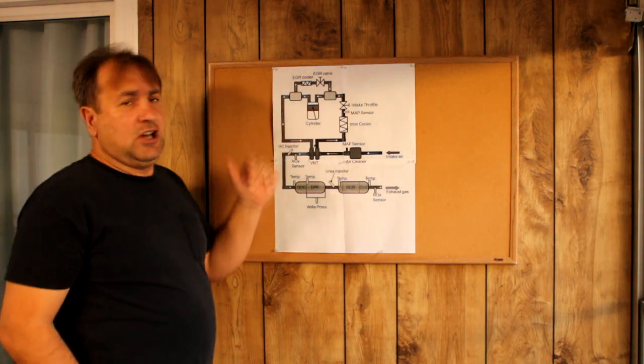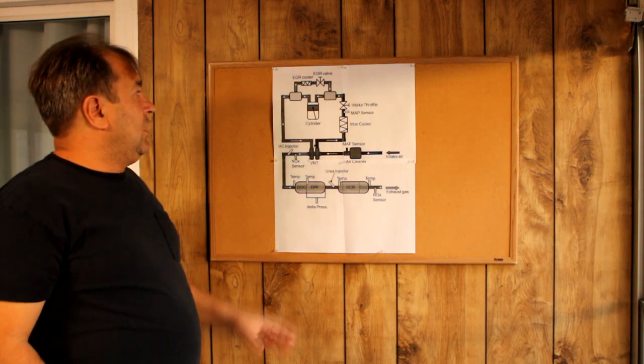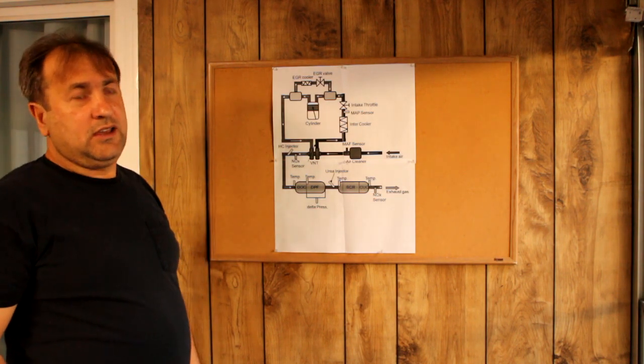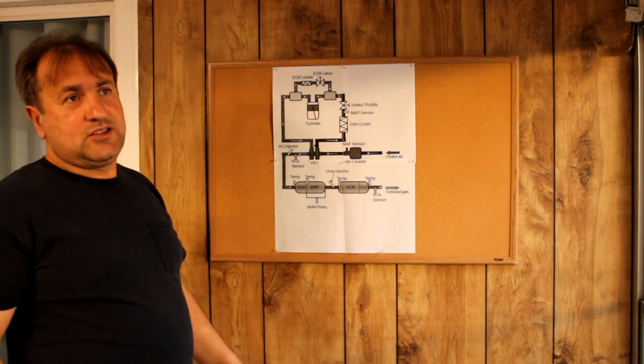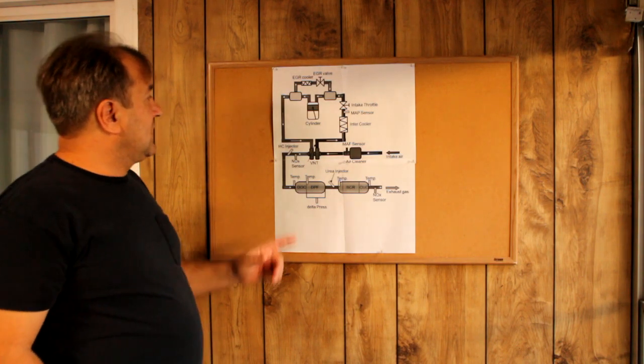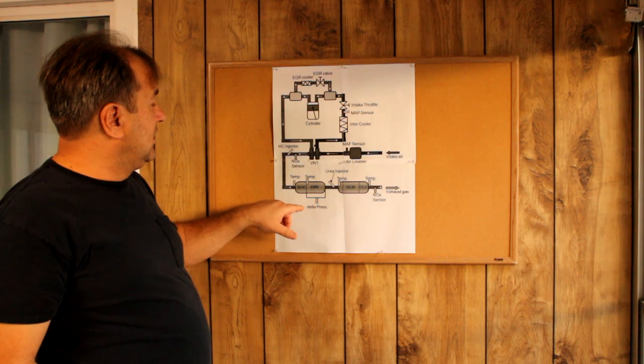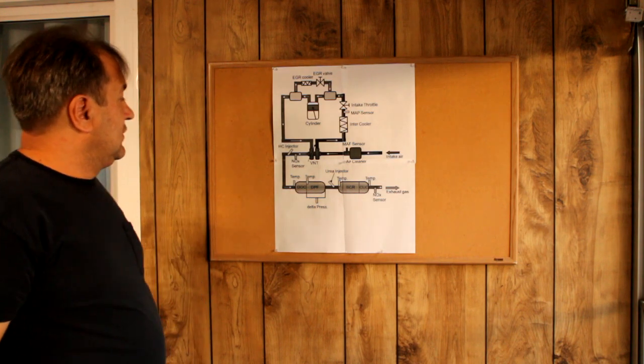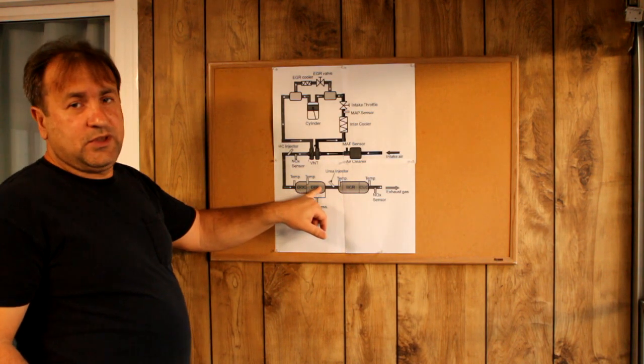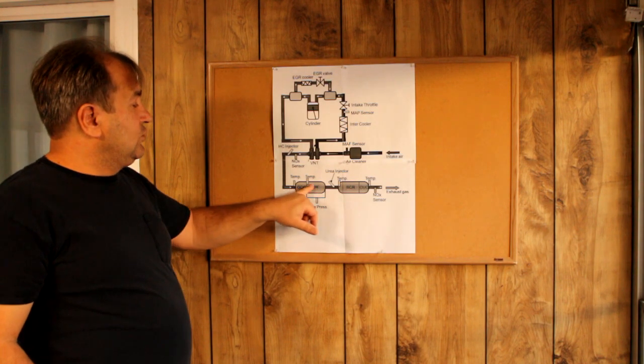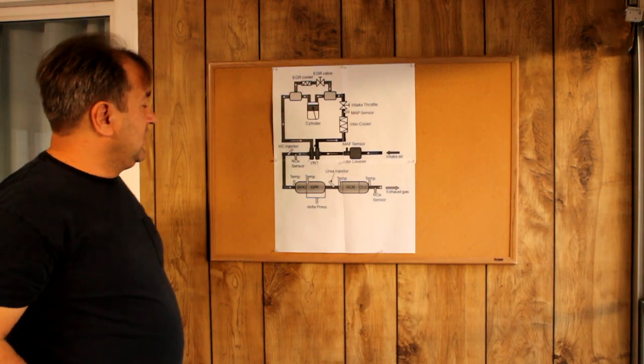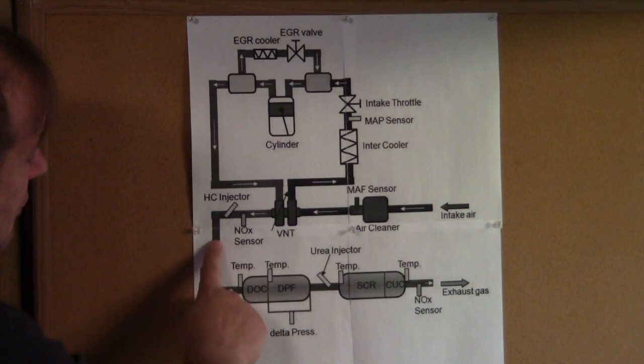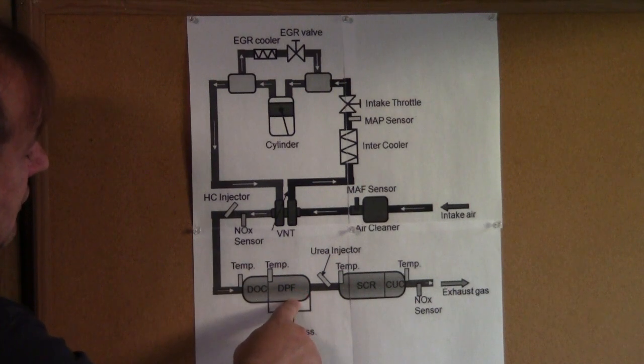This was one step to reduce emissions. After this, they checked the exhaust and saw the smoke was too high. NOx was low but soot was too high. The second step they implemented was the DPF filter. The DPF filter tries to reduce the soot.